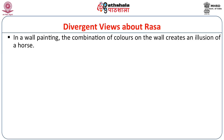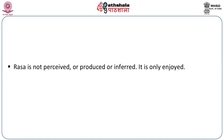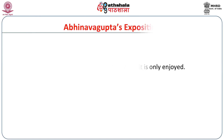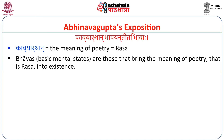Another theory says it is like a wall painting — there are various colors, but together they show you that it is a horse. Another theory says that Rasa can be directly expressed but not perceived; it cannot be produced or inferred, it is only enjoyed. We will go to the theory of Abhinava Gupta, whose exposition is now the mainstream view.